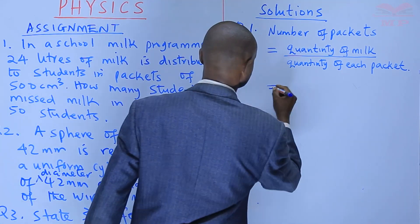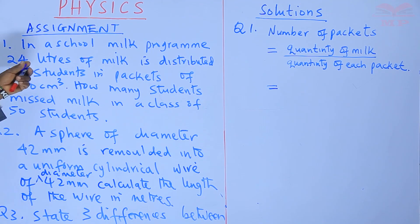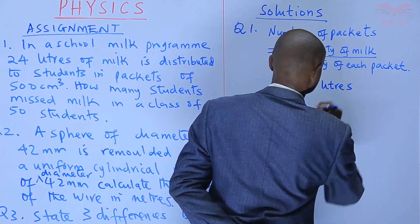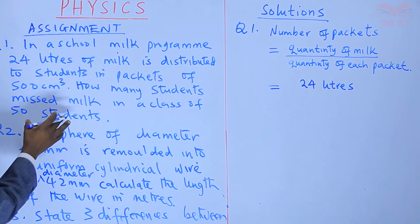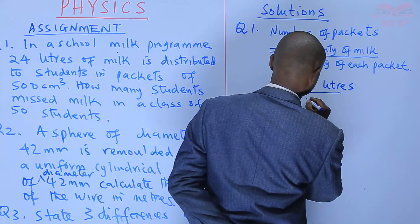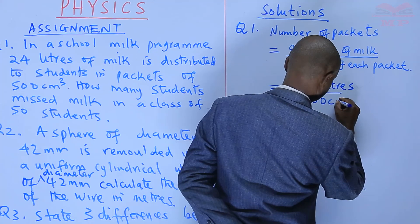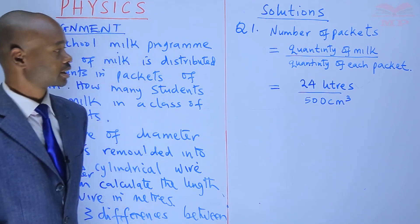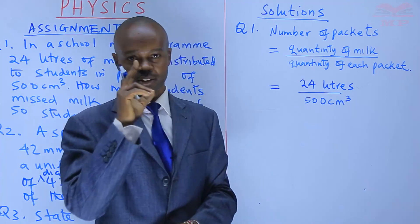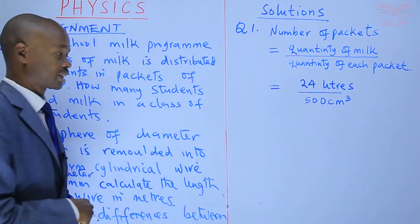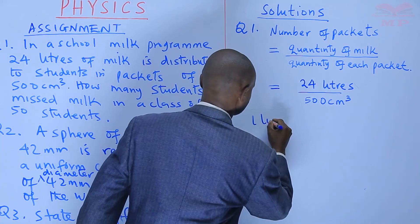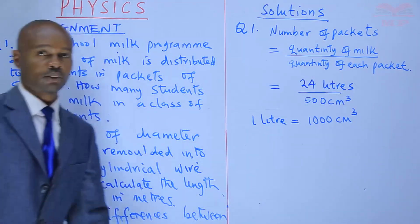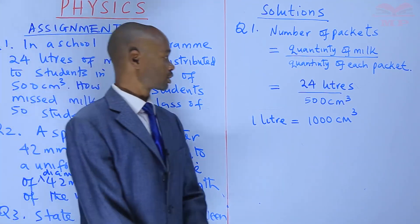So the quantity of milk — are we given the quantity of milk? Yes, it is 24 liters. The quantity of each packet is 500 cubic centimeters. So when you reach here, you cannot divide unless you have one common unit. Something very important springs up: you should be able to know that one liter is equal to 1000 cubic centimeters.